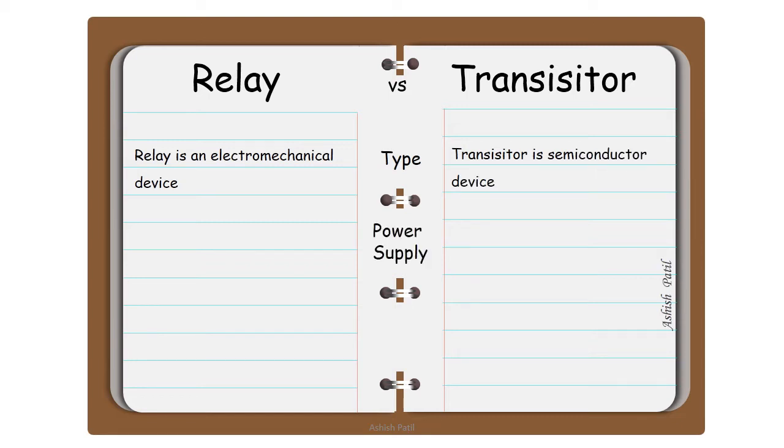Second point: Power supply. Relay can work on both AC and DC. Transistor can work on DC only.